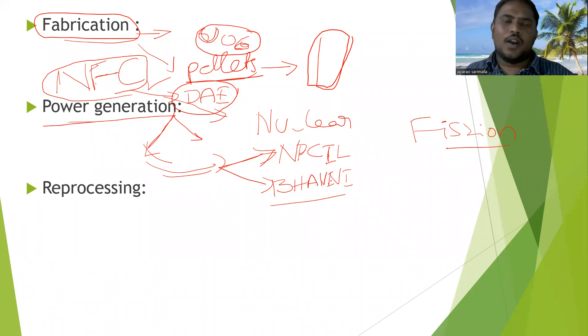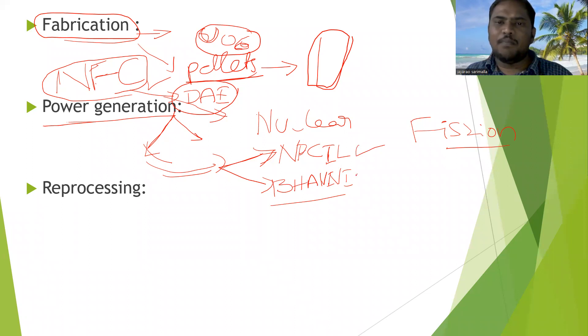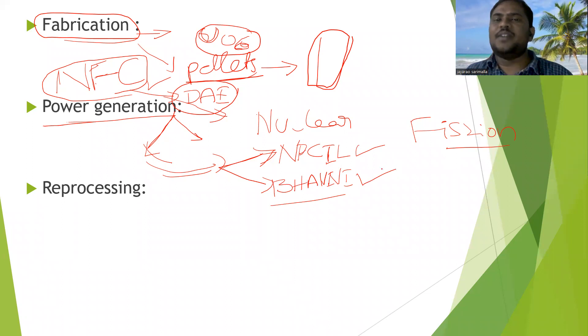NPCIL stands for Nuclear Power Corporation of India Limited, and BHAVINI stands for Bharatiya Nabhikiya Vidyut Nigam Limited. NPCIL monitors first-generation nuclear power, while BHAVINI oversees second-generation and breeder reactor programs.